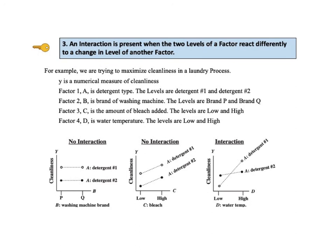KTU number 3 says, an interaction is present when the two levels of a factor react differently to a change in the level of another factor. For example, let's say we are trying to maximize the cleanliness in a laundry process. Y is a numerical measure of cleanliness. Factor 1, also known as A, is the detergent type. The levels are detergent number 1 and detergent number 2. Factor number 2, also known as B, is the brand of washing machine. The levels are brand P and brand Q. Factor 3, also known as C, is the amount of bleach added. These levels are low and high. Factor 4, also known as D, is water temperature. The levels are low and high.